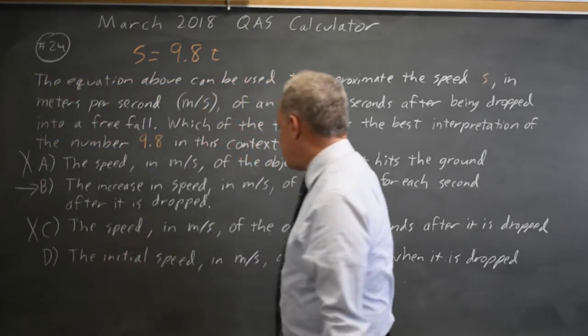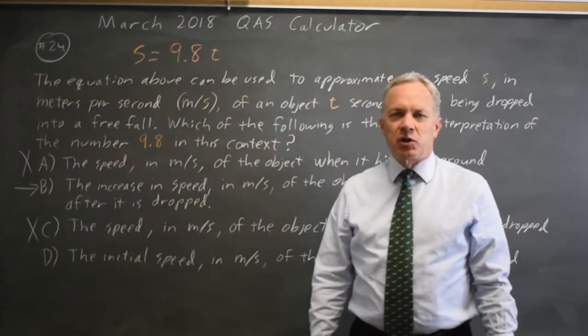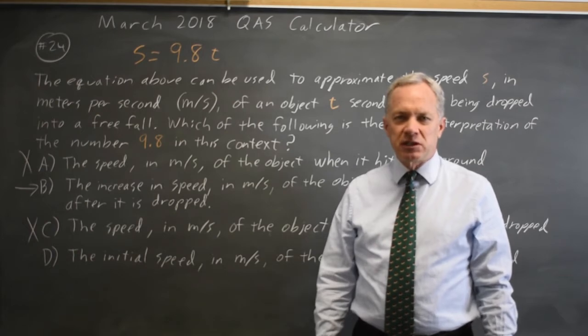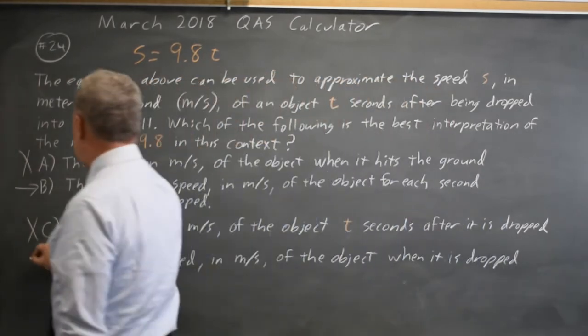Choice D says 9.8 is the initial speed, but at time 0, this formula gives us speed equals 0, so that's not 9.8 and D is wrong.